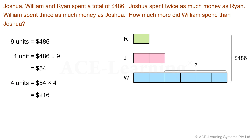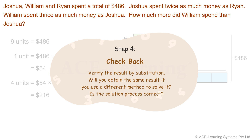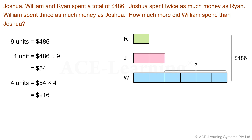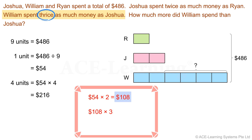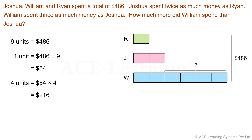Have we solved the problem? Is the solution correct? Let's proceed to Step 4, a very important step: Check back. Ryan's expenditure is 1 unit = $54. Joshua spent $54 × 2 = $108. William spent $108 × 3 = $324. $324 − $108 = $216. This matches the answer we found earlier. Now let's write the statement: William spent $216 more than Joshua.